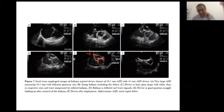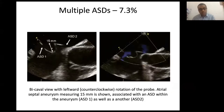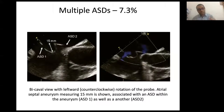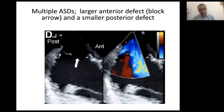The next important anatomical challenge is multiple defects, which usually occur in the context of an aneurysmal septum. This is ASD number one, which is relatively posterior, and ASD number two, which is anterior, with a septal aneurysm defined by excursion of more than 15 mm. In most cases we close the larger hole and leave a smaller hole, but for multiple defects with aneurysmal septum the recommended device is not the classical double-umbrella self-centering type but the non-self-centering type such as GORE or Helix.